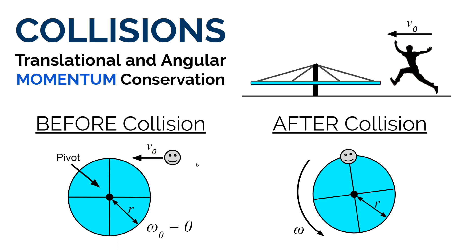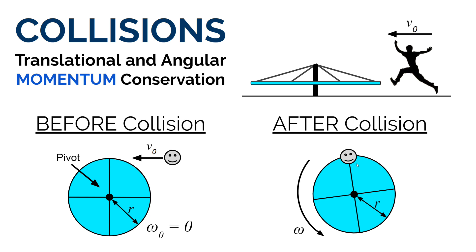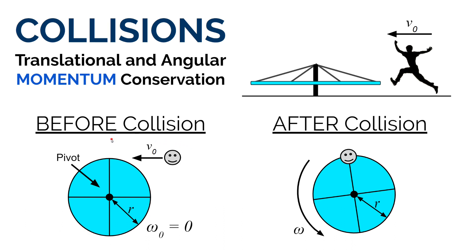Do we think about the translational momentum of each? In the beginning, the student has some translational momentum — they have a mass and a linear velocity. The merry-go-round has no translational velocity; it's fixed about the pivot point. In the end, nothing has translational momentum — they only have angular momentum. If the system is defined as the student and the merry-go-round, before the collision the system has translational momentum but no angular momentum. After the collision, the system as a whole has angular momentum.